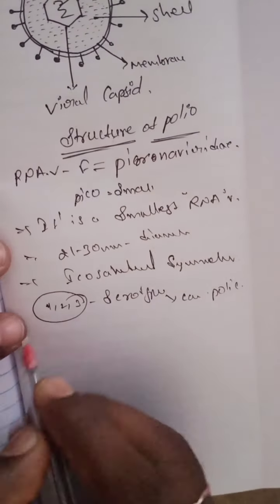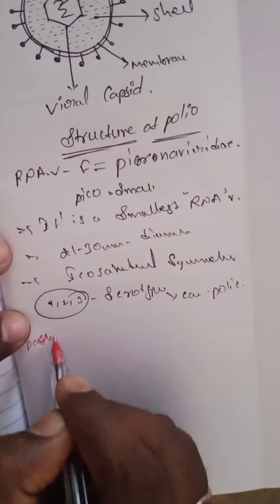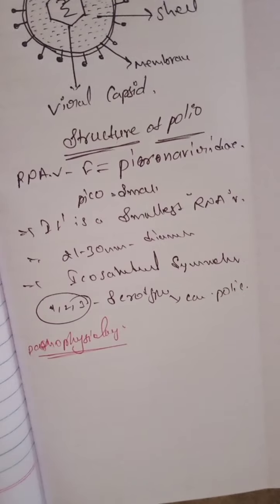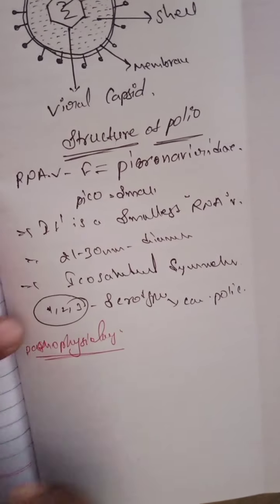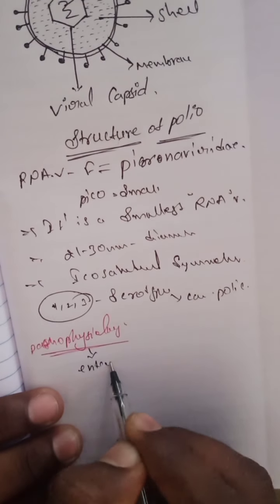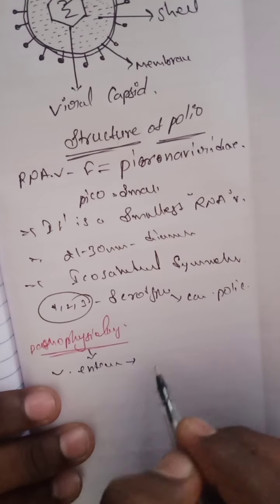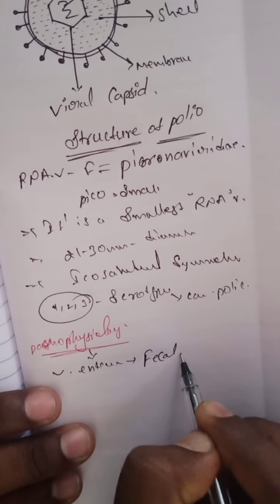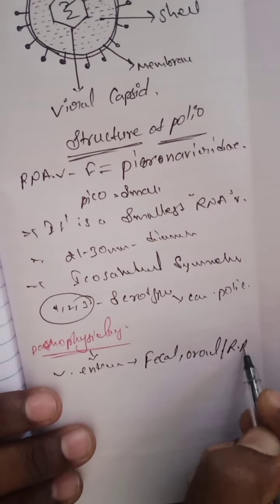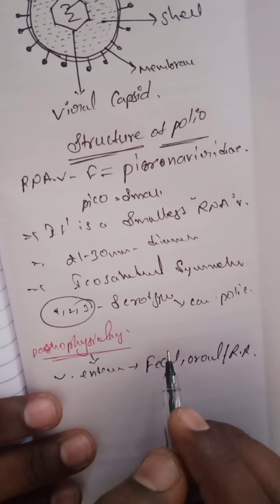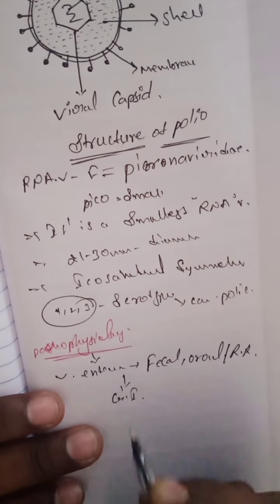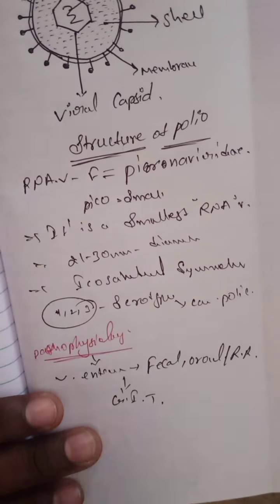So what is the pathophysiology? The virus enters into the body via the fecal-oral route or the respiratory route. It then enters the lymphoid tissue of the gastrointestinal tract.